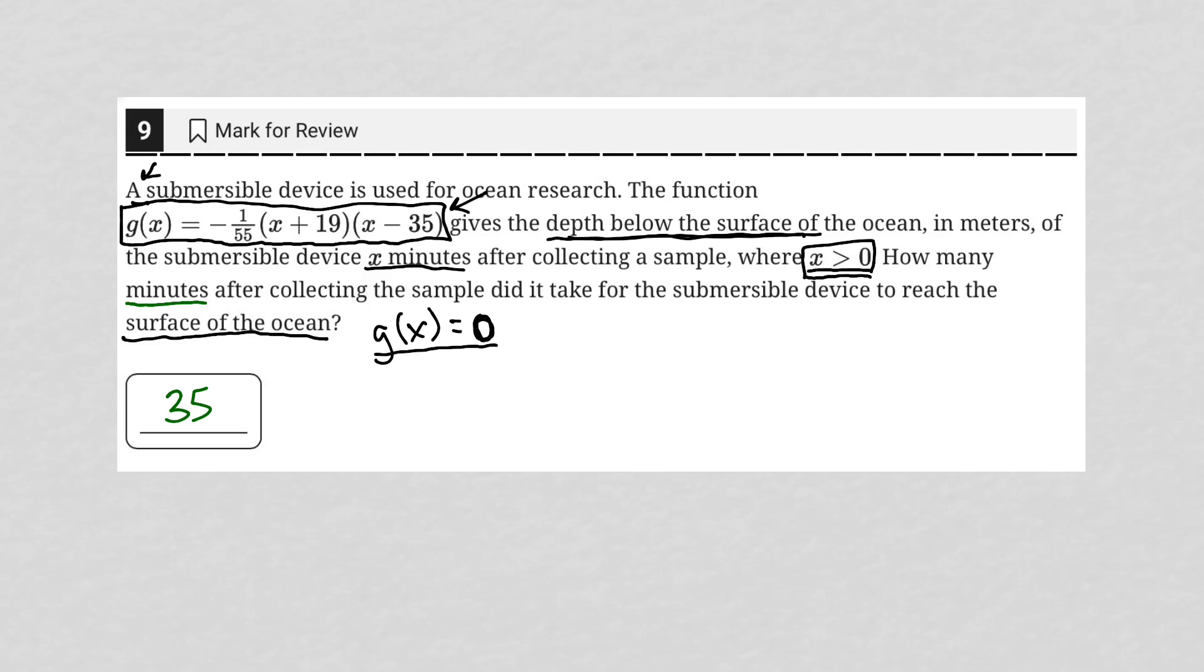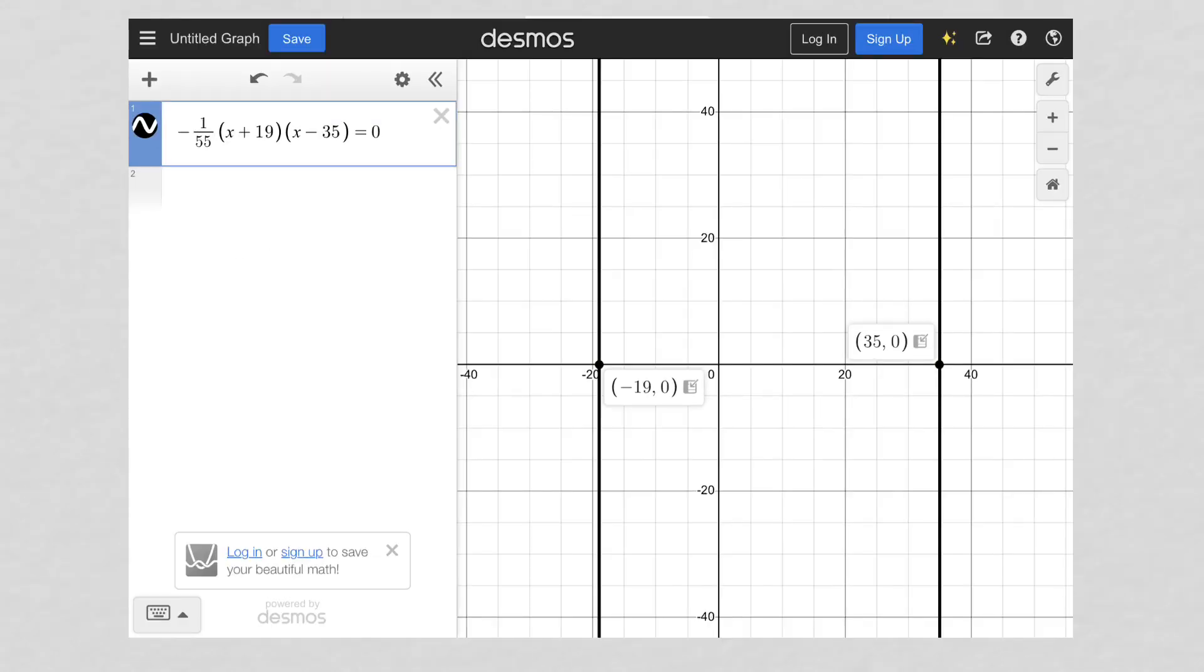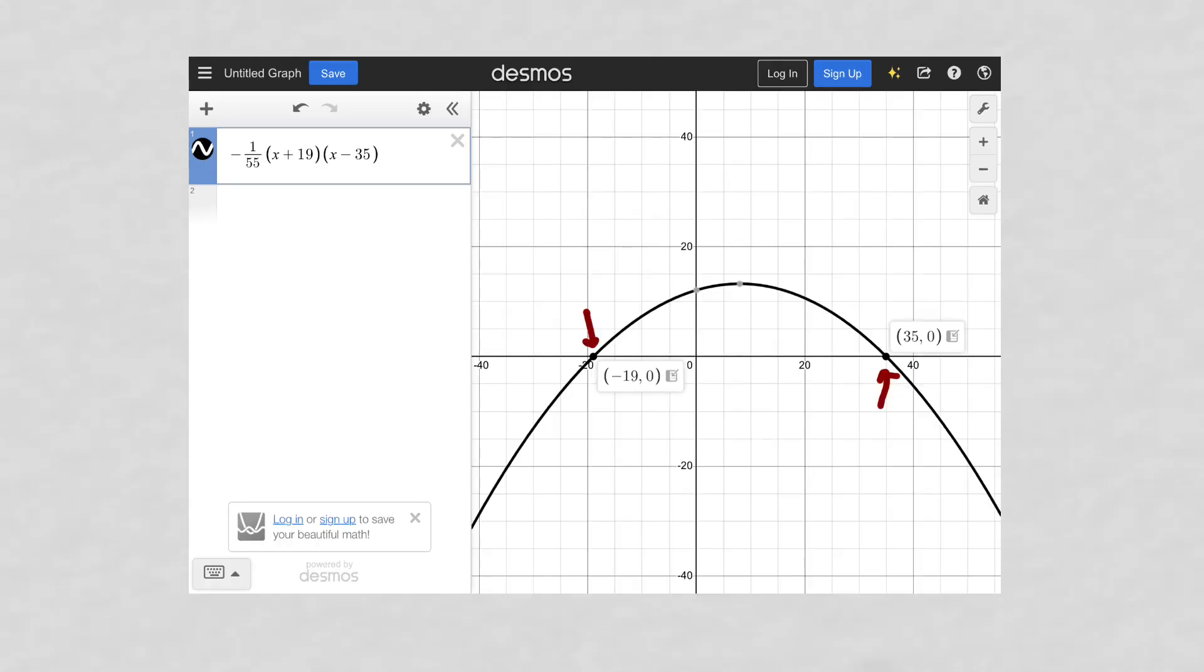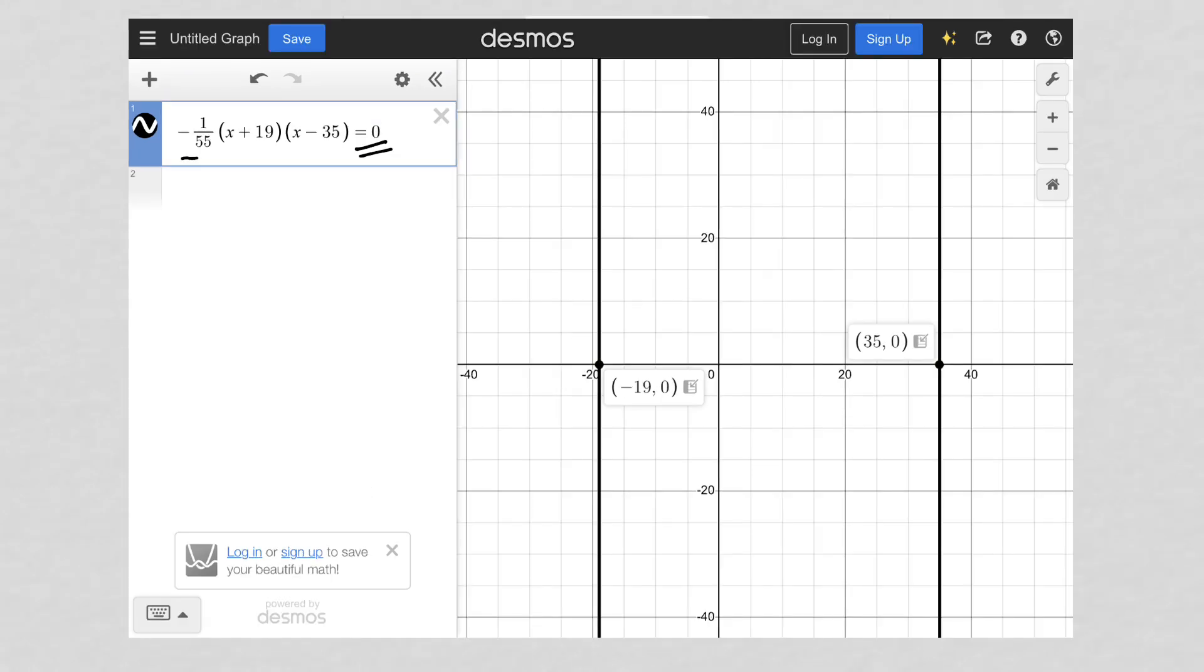So it must be the 35 option. I also added here what happens in Desmos when you actually enter in the equal zero on your equation. So the difference between there and not having the equal zero is here you have to know that you're looking for the x-intercepts. Here we're literally plugging it in based upon our understanding of interpreting and translating what the word problem says.